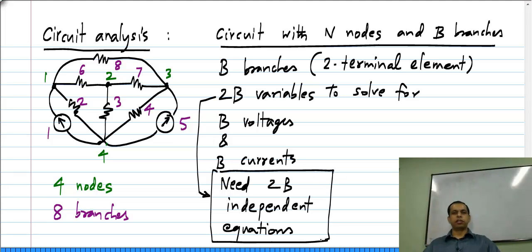So if we have a circuit with B branches and each branch constitutes a two terminal element, then we have to somehow generate them from circuit laws as well as the element behavior. And then if we solve for these equations, we will find the solution to our circuit. So this is what is meant by completely solving for a circuit.